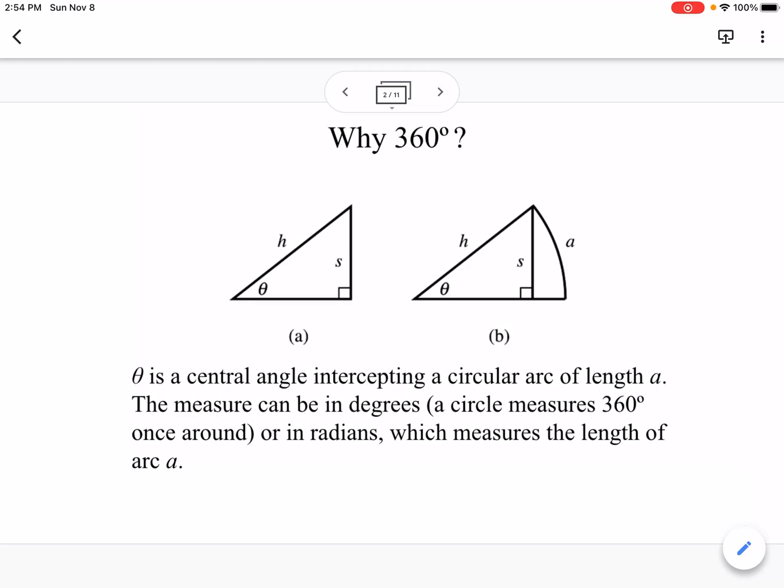So the first thing to talk about is the difference in the two types of angle measures. We have 360 degrees, so the distance if we have a circle, measuring the degrees all the way around the circle is 360.